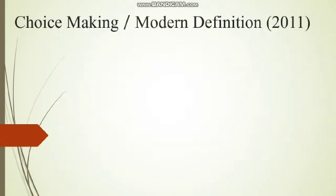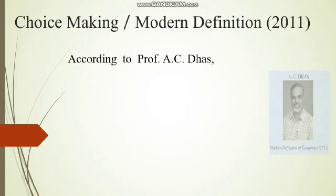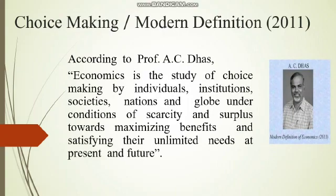The choice-making or modern definition comes in 2011 by Professor S.C. Das. According to him, economics is the study of choice-making by individuals, institutions, societies, nations, and the globe under conditions of scarcity and surplus towards maximizing benefits and satisfying their unlimited needs, present and future.